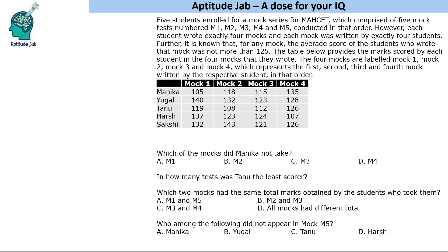To understand the data: suppose Manika does not appear in M3. Then her first mock is M1, second is M2, she skips M3, and writes M4 and M5 as her third and fourth mocks. If Yugal does not appear in M1, his first mock is M2, then M3, M4, and M5. If Sakshi does not appear in M5, her mocks are M1, M2, M3, and M4 in order. So the mock labels in the table reflect the chronological order in which each student appeared.